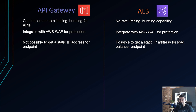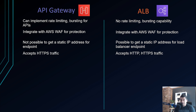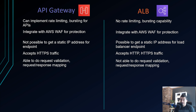For API Gateway, it is not possible to get a static IP address for your endpoint — you will always have a URL. For ALB, it is possible to get a static IP address using Global Accelerator. Additionally, API Gateway only accepts HTTPS traffic, while ALB accepts both HTTP and HTTPS traffic.